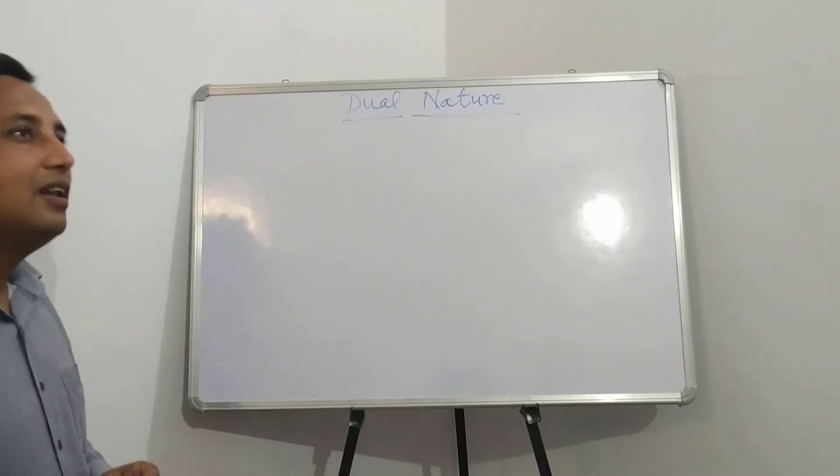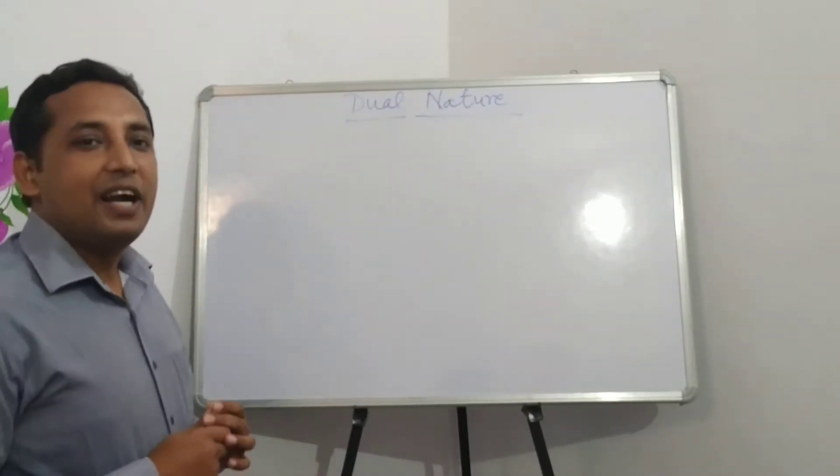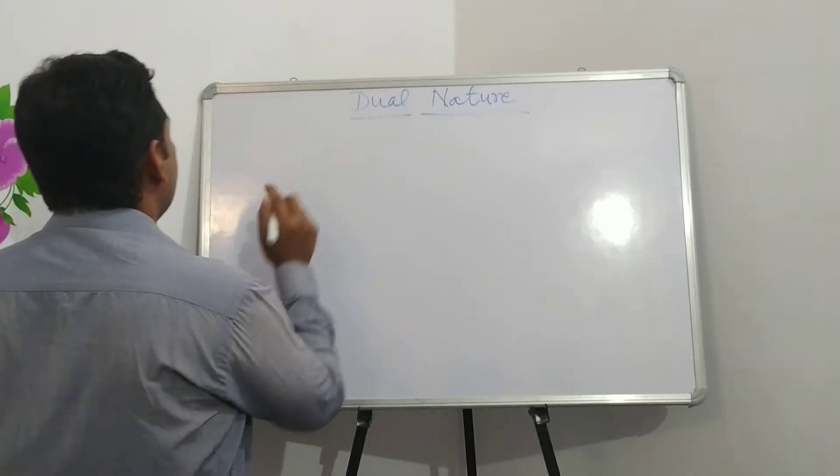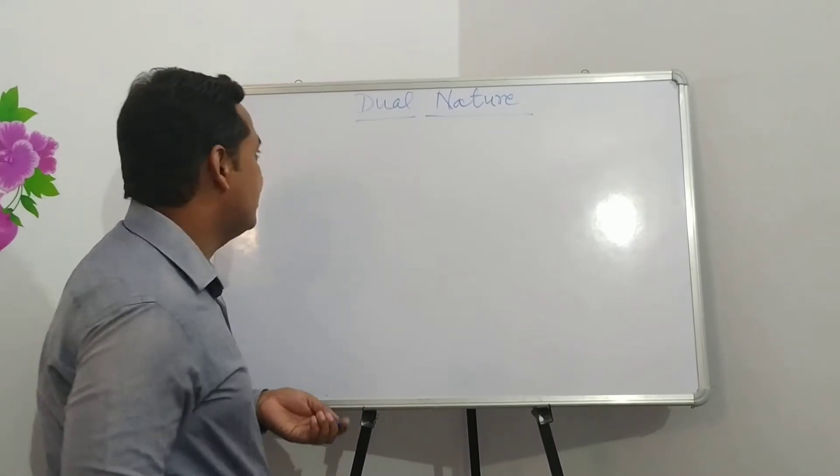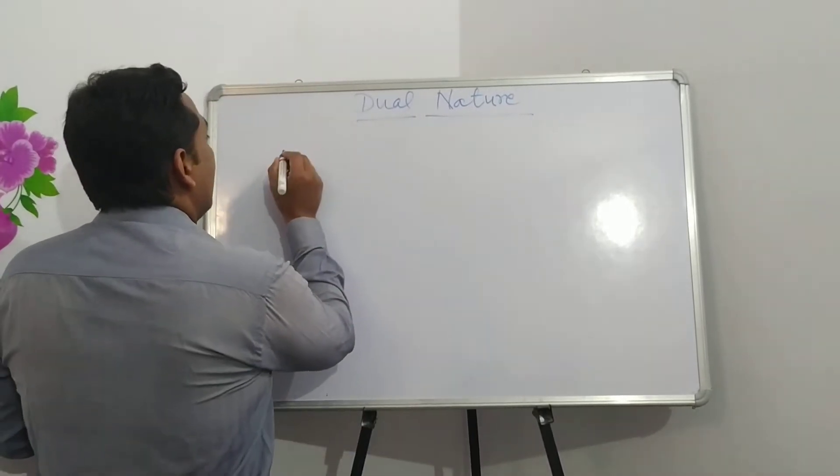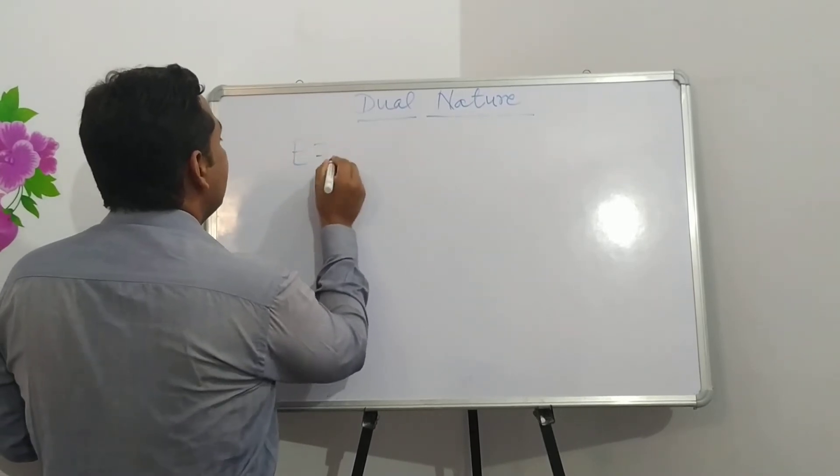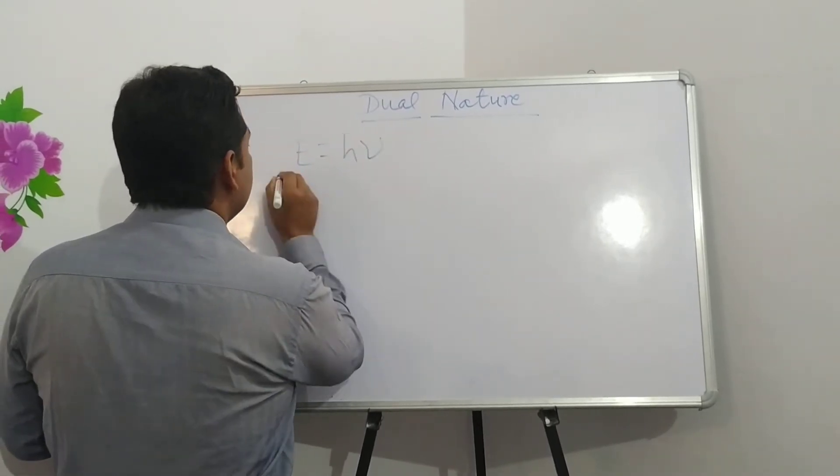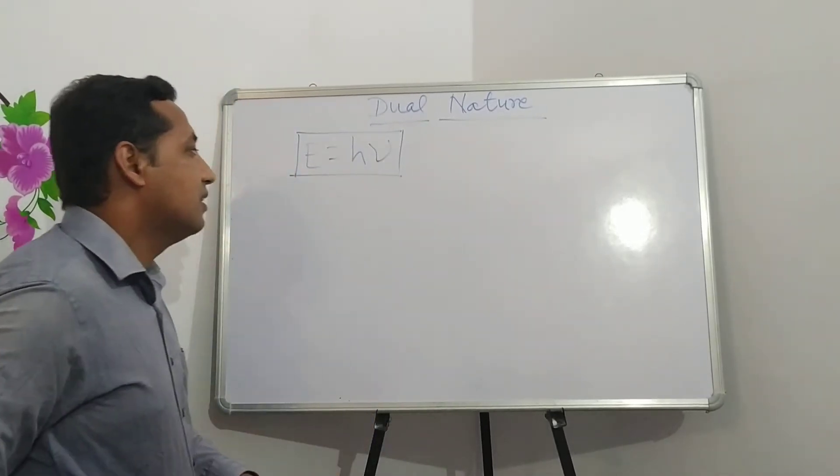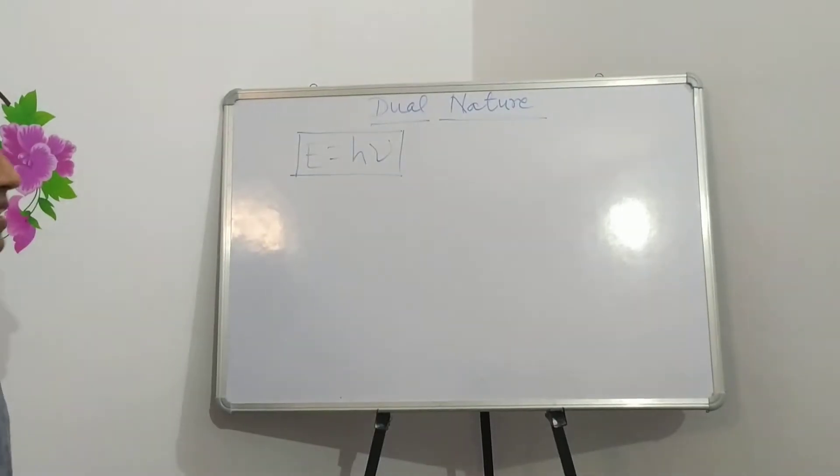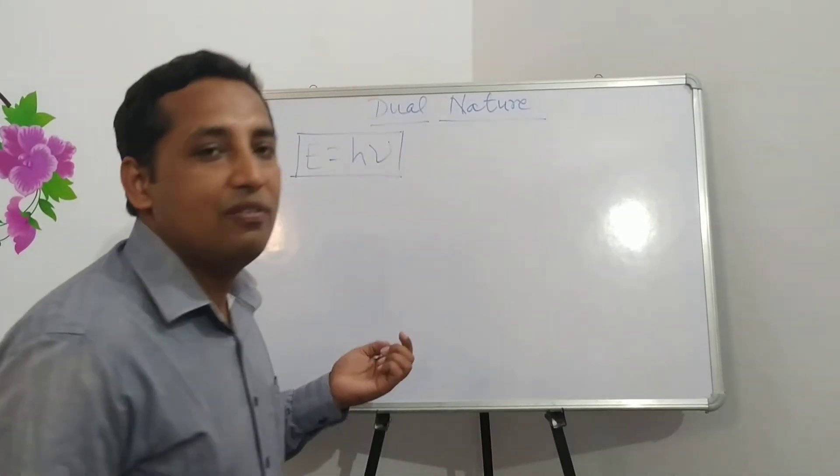First of all, we will have to discuss about the particle nature of electron. As we earlier discussed, formula which is known as E is equal to hν. This formula exactly represents the wave nature of electron.